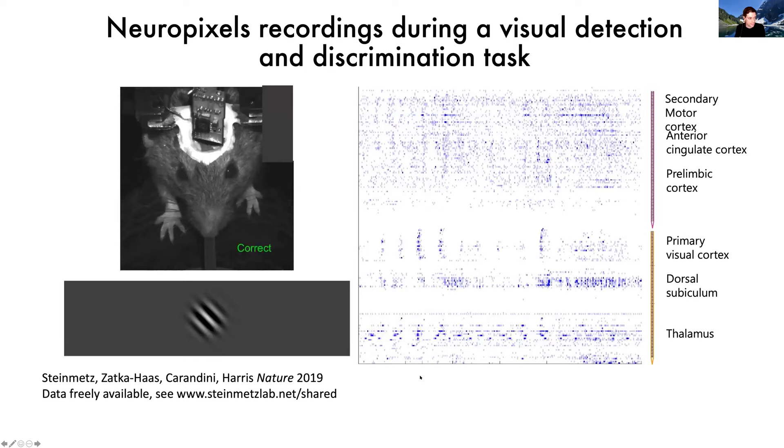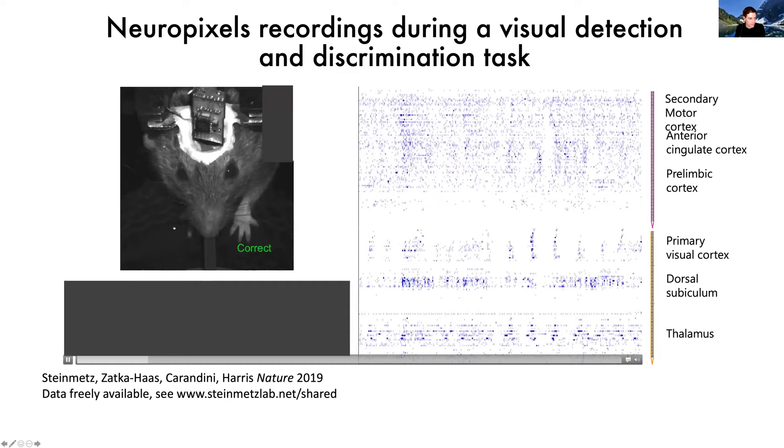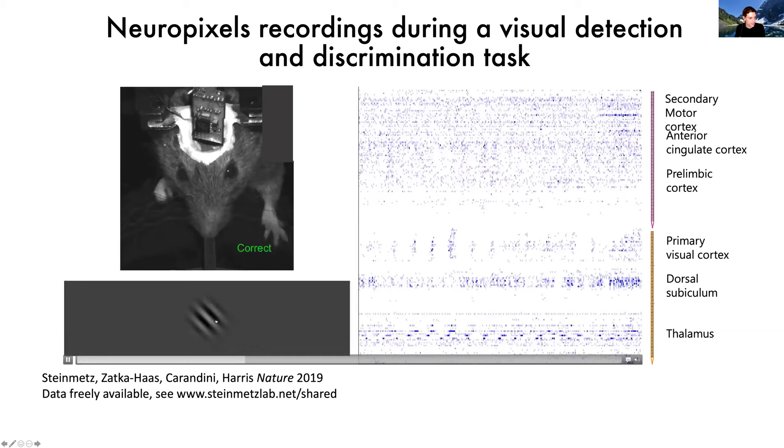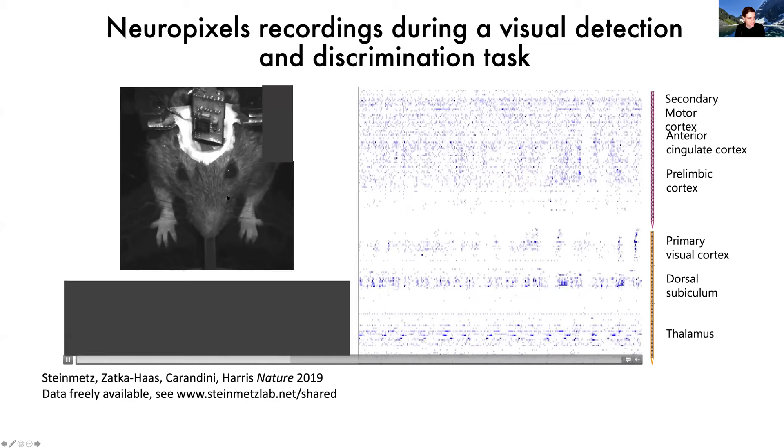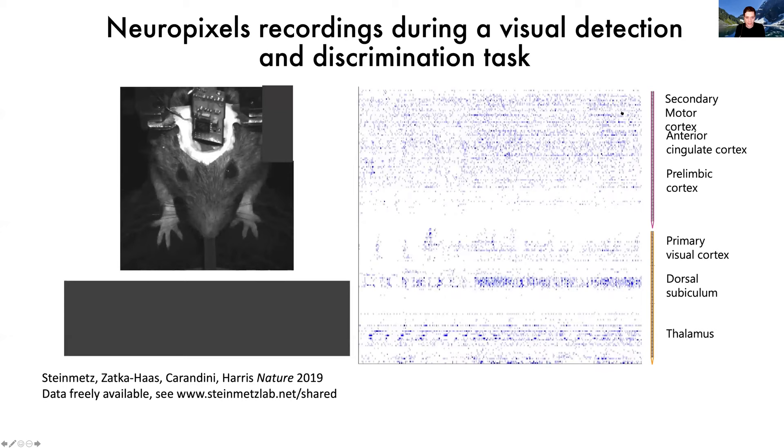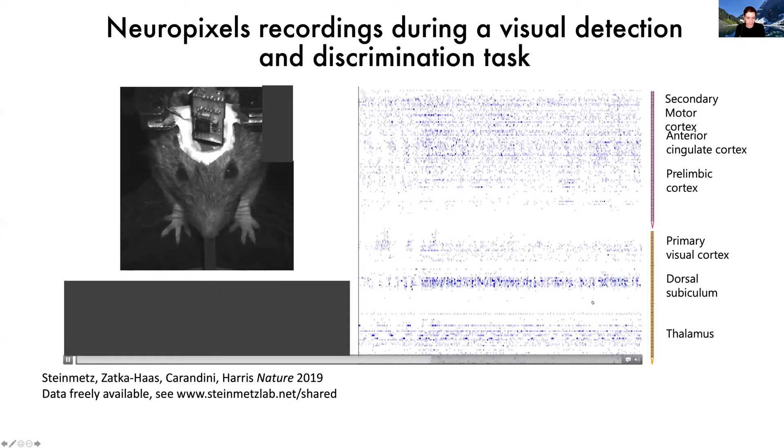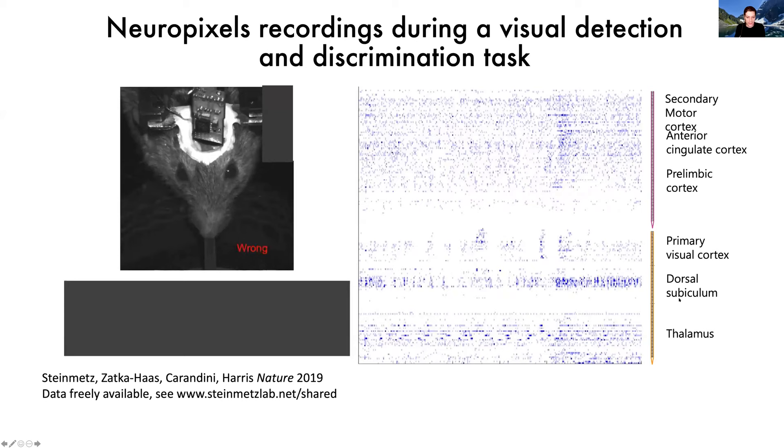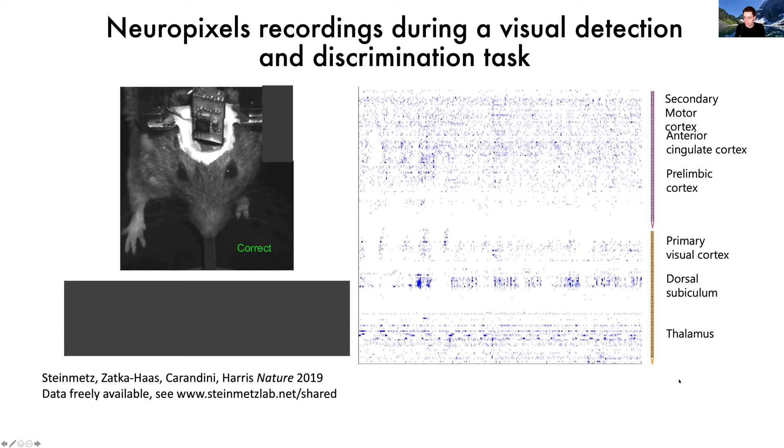Then we combine the performance of this task with Neuropixels recording. So this is a video of a mouse. You can see this wheel that the mouse's forepaws are resting on, and you can see him turning the wheel. And this is the visual stimuli that the mouse is seeing, and you can see the visual stimulus appears on one side or both, and then the mouse turns the wheel to bring the stimulus to the center screen, earning a reward. And at the same time, we're combining this with Neuropixels recordings. And so over here on the right, you can see the data from two different Neuropixels probes. There's this one in the frontal cortex and another one in the back that goes through visual cortex, hippocampus, and thalamus. And you can see that we're able to report from all of these sites, hundreds of neurons simultaneously across multiple regions of cortex and subcortical areas. And this is the data that we then wanted to study and ask how are different aspects of this visual detection and discrimination task encoded across the brain.